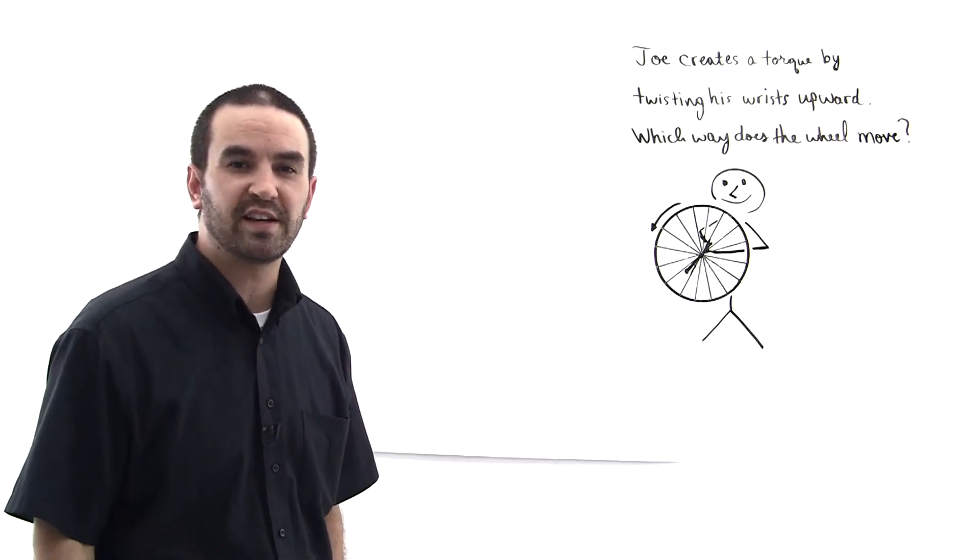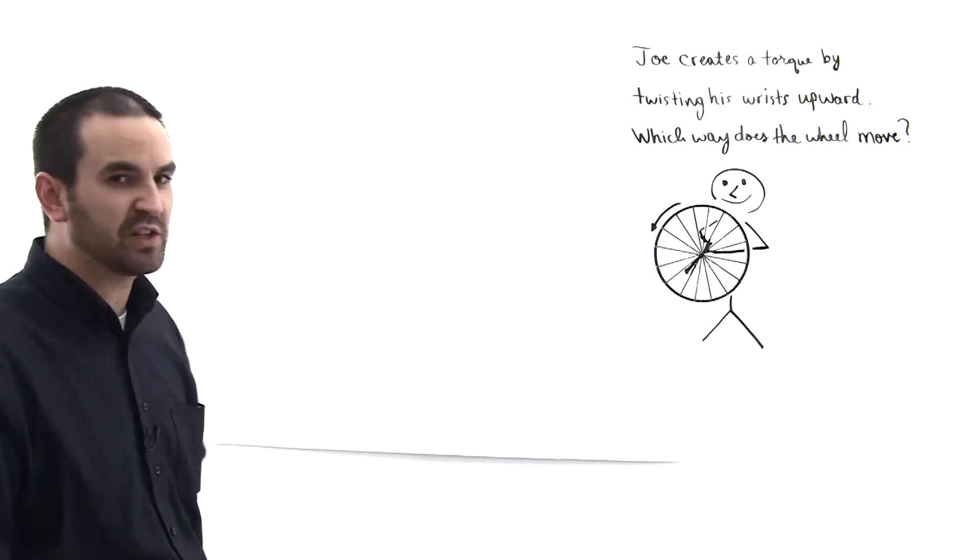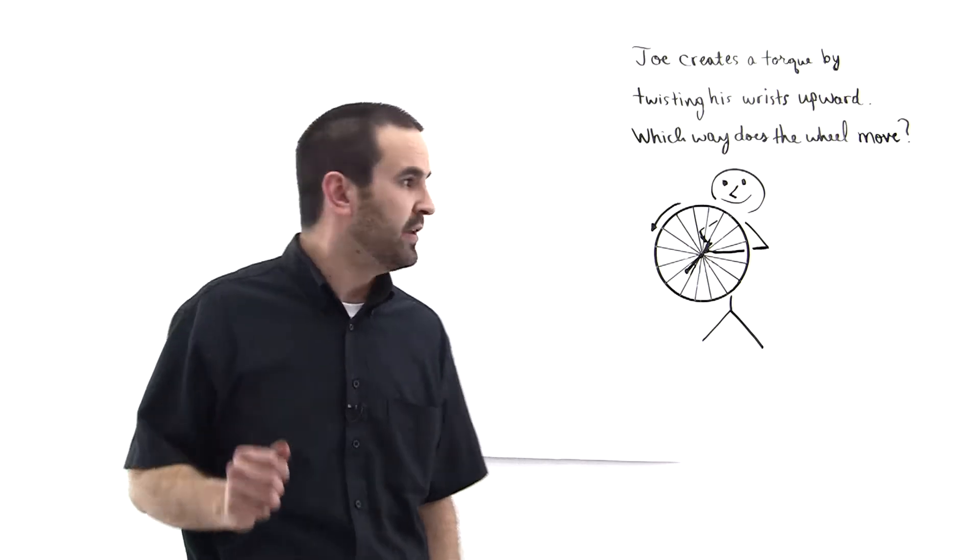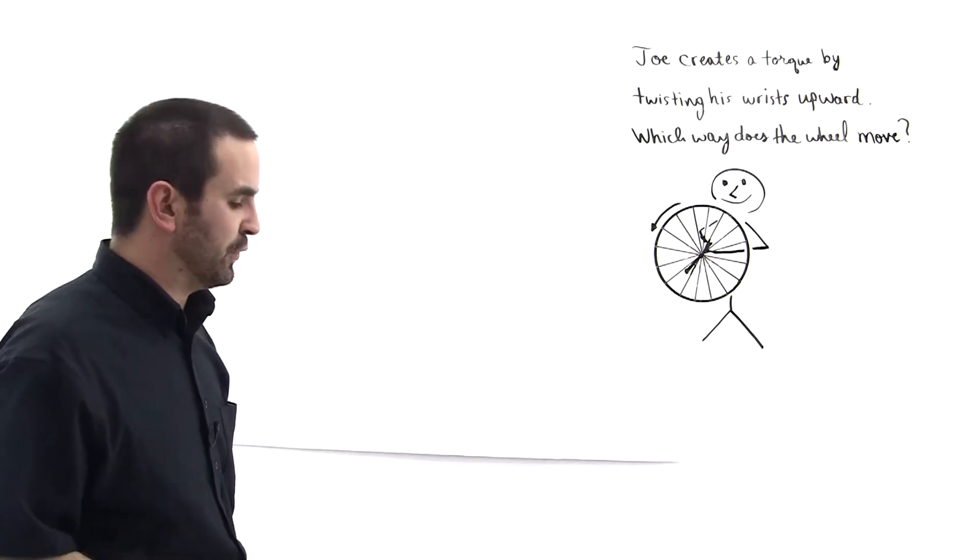Joe is holding this spinning wheel as shown and he creates a torque by twisting his wrist upward. Which way does the wheel move?